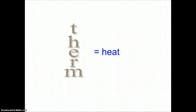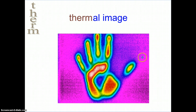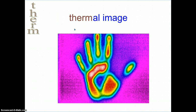Our next root is therm, which means heat. Our first example is thermal image. This is not just a really cool technicolored picture — it is an image of the heat in someone's hand. A thermal image measures the amount of heat in different areas, and the different colors represent the different amounts of heat in that area.